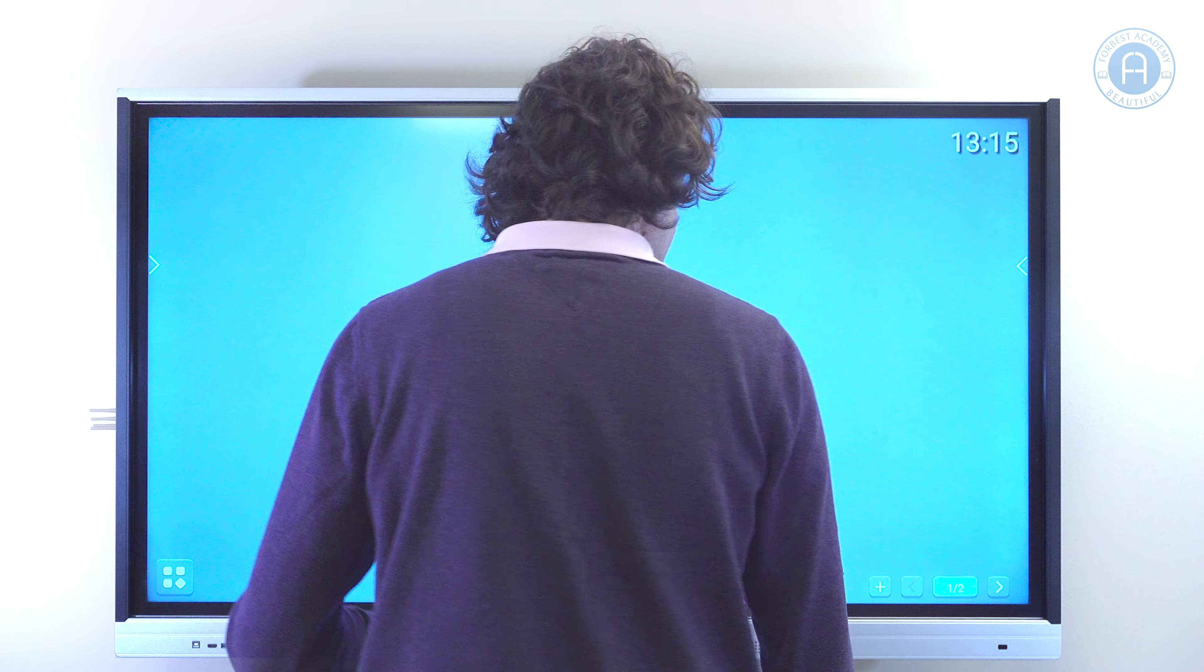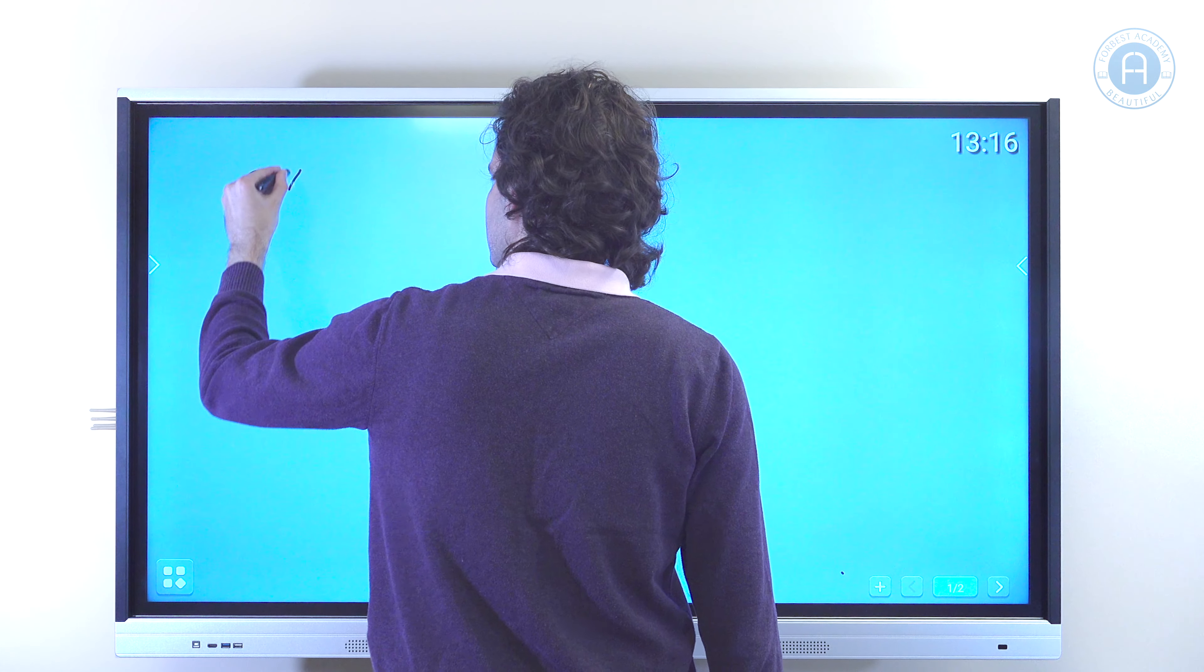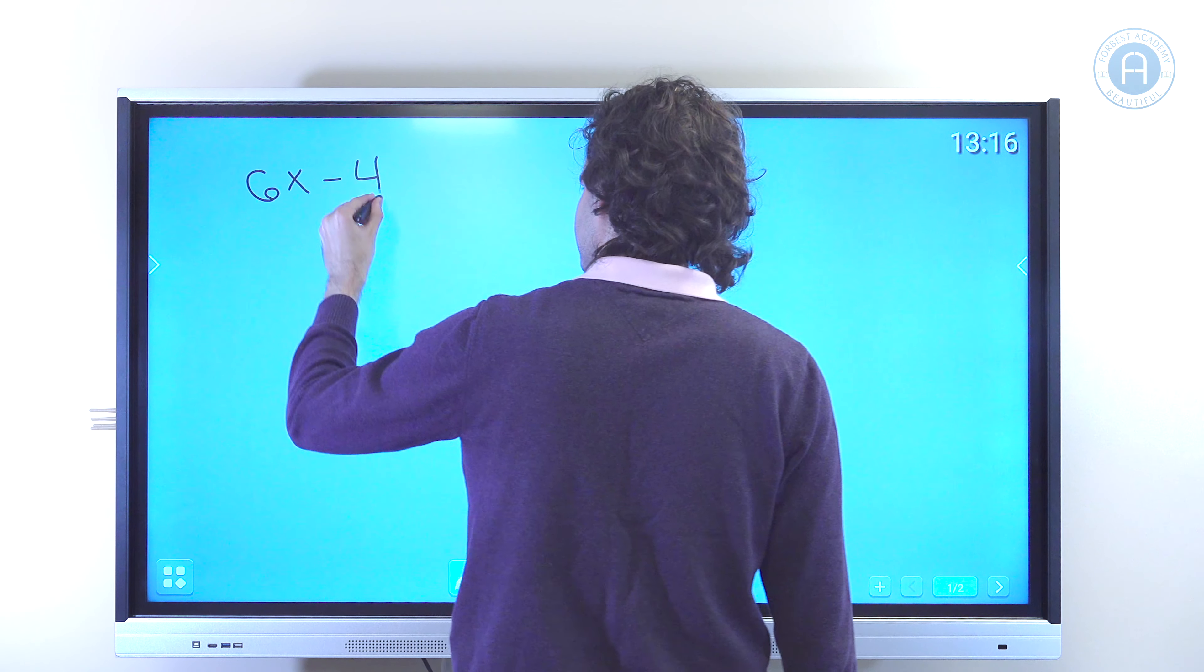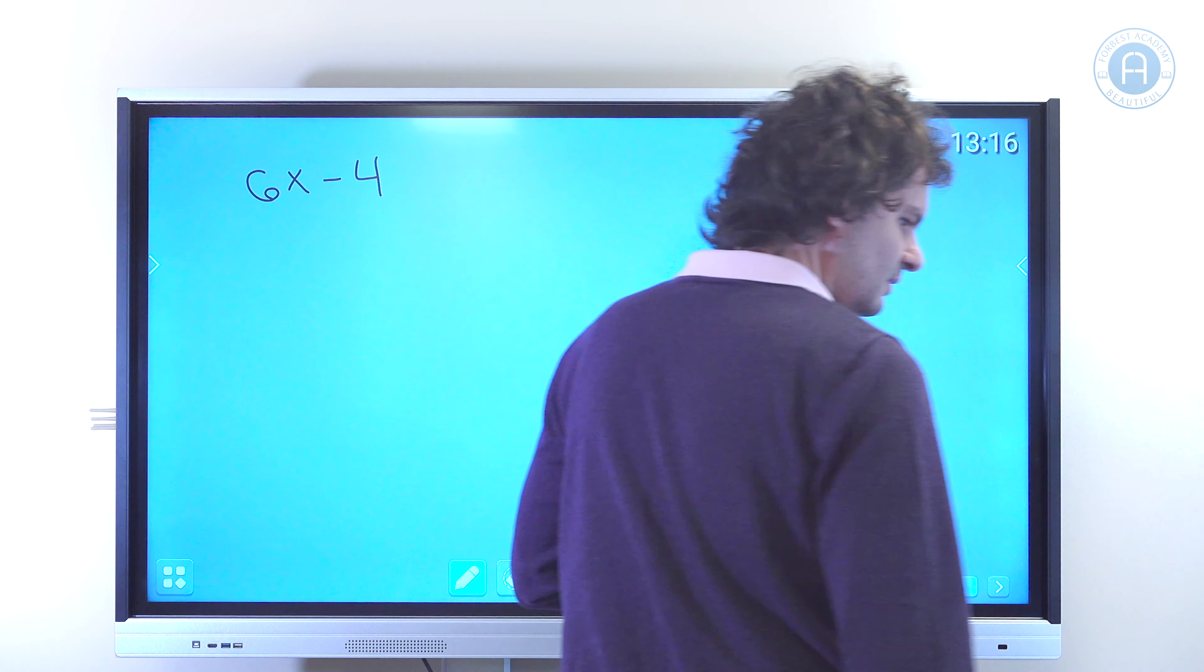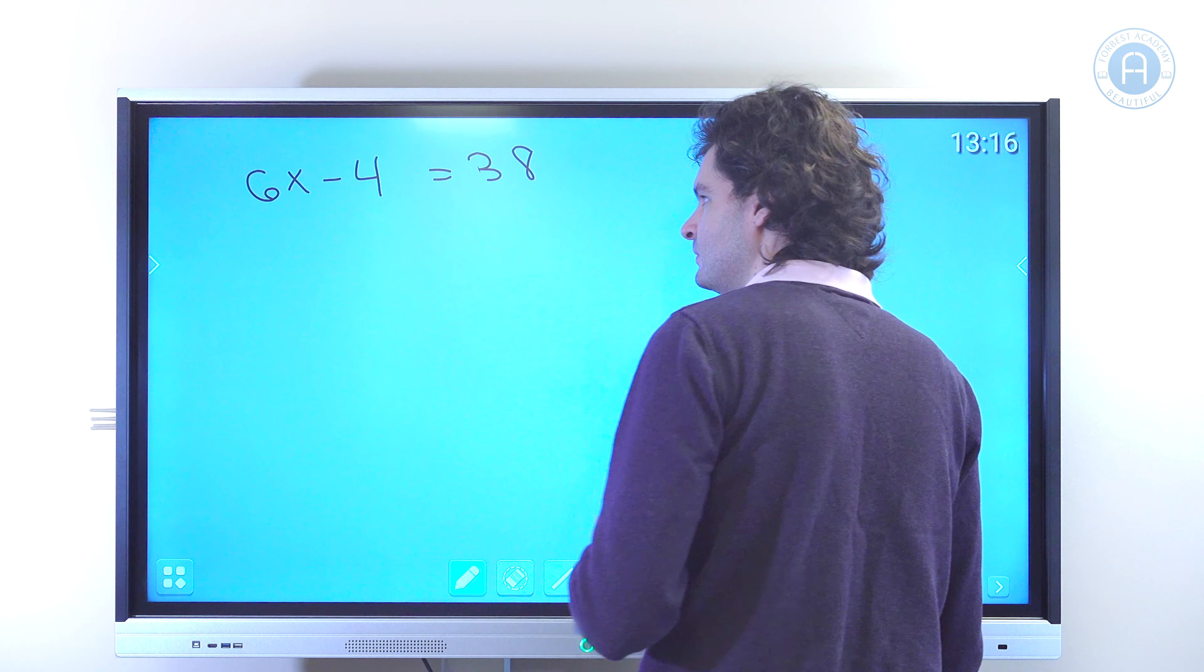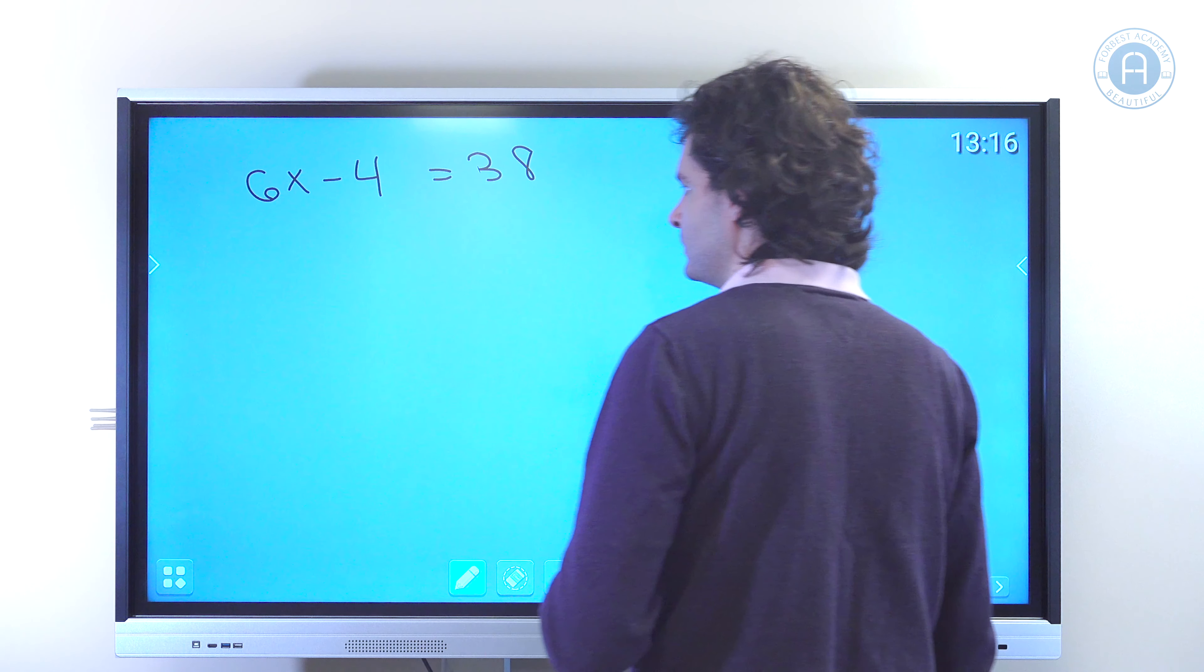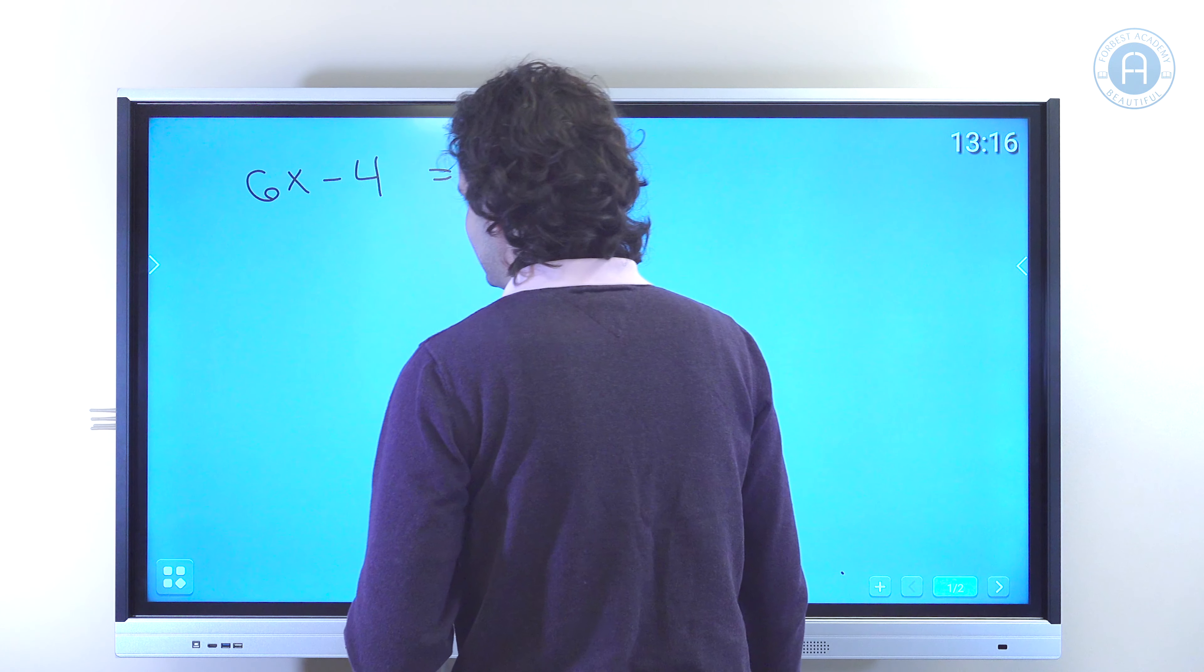Okay, so let's solve this equation. So we have 6x minus 4 equals 38. What we can do is try to find the value of x first. So this is a linear equation.